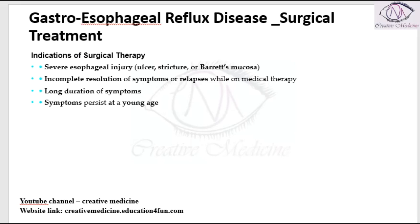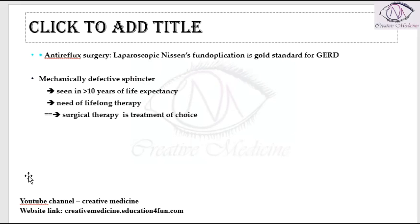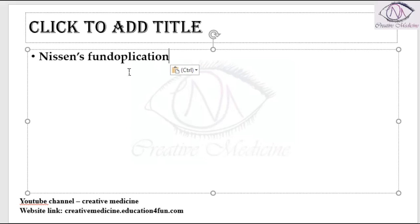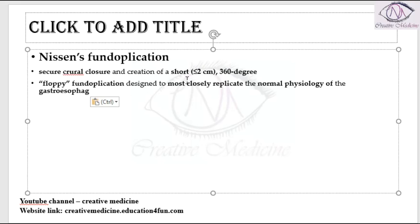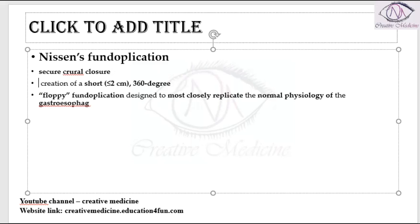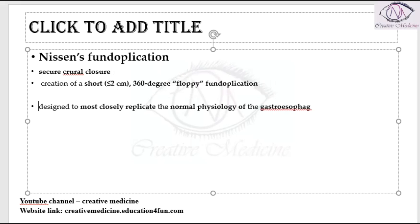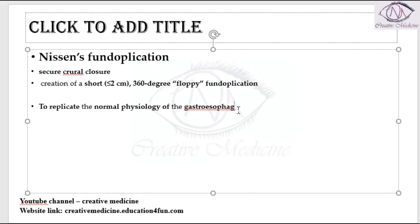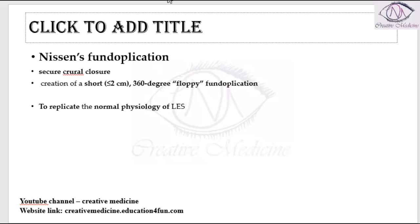Now, what are the principles of Nissen Fundoplication? First and foremost, we should achieve a secure crural closure — the crura should be closed. We should then create a small, short 360-degree floppy fundoplication. This is done mainly to replicate the normal physiology of the lower esophageal sphincter.